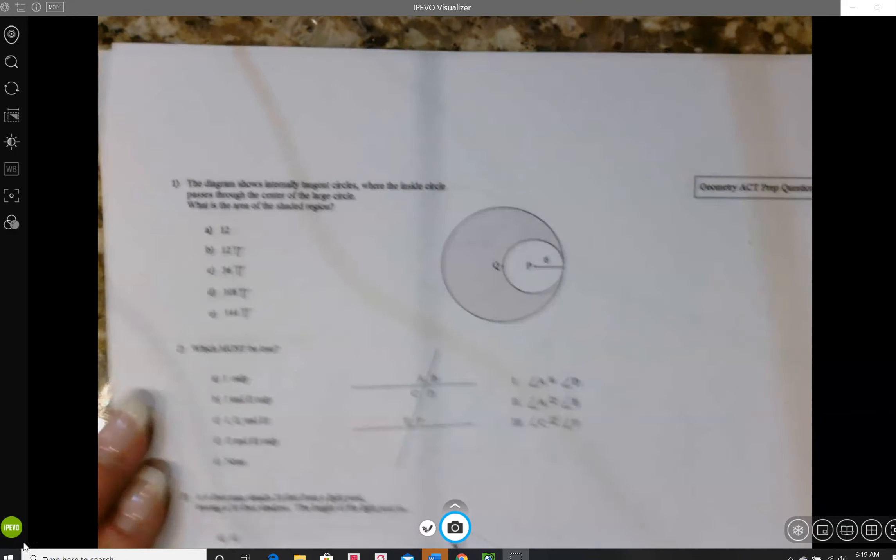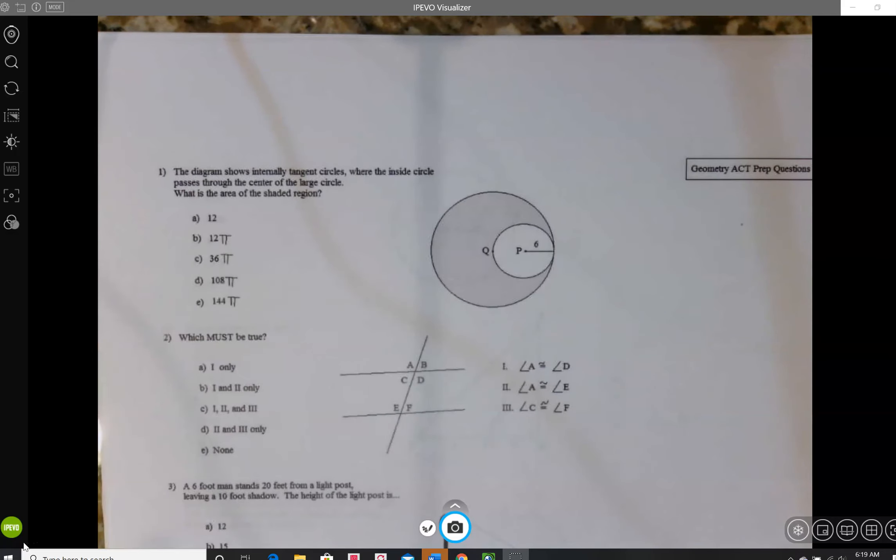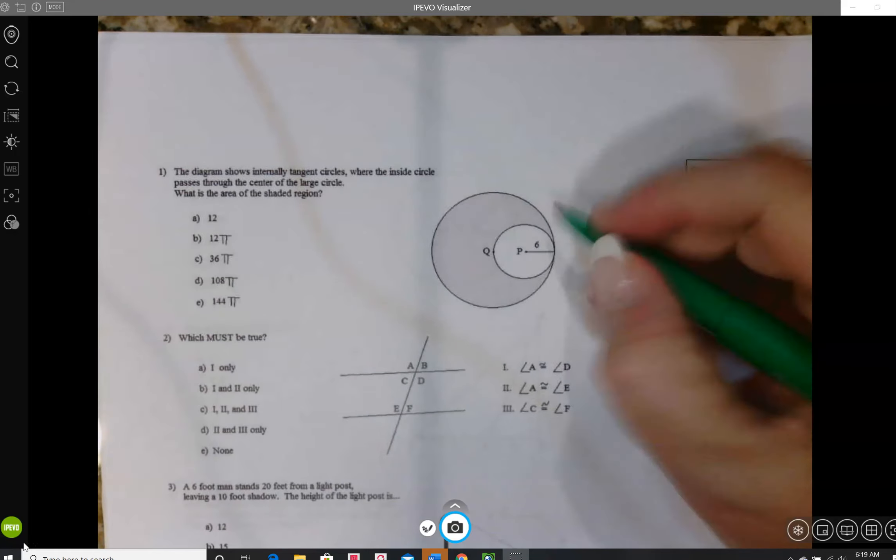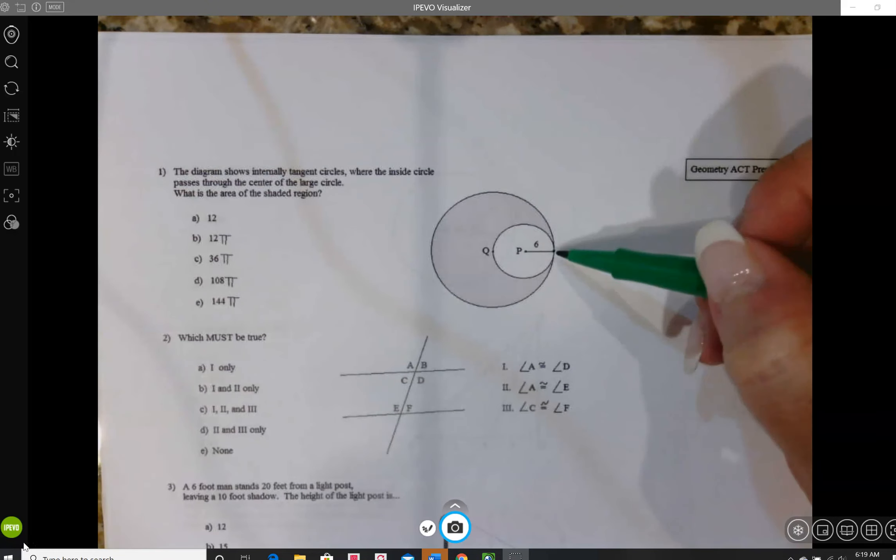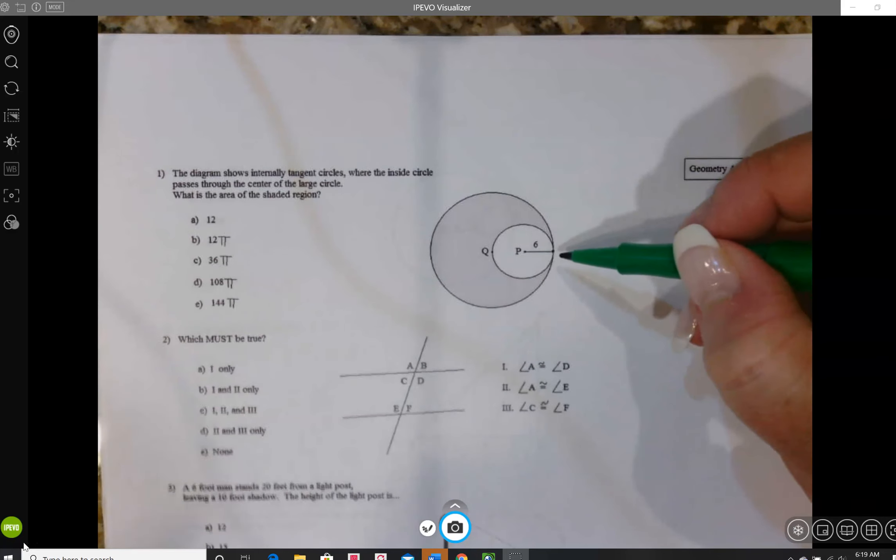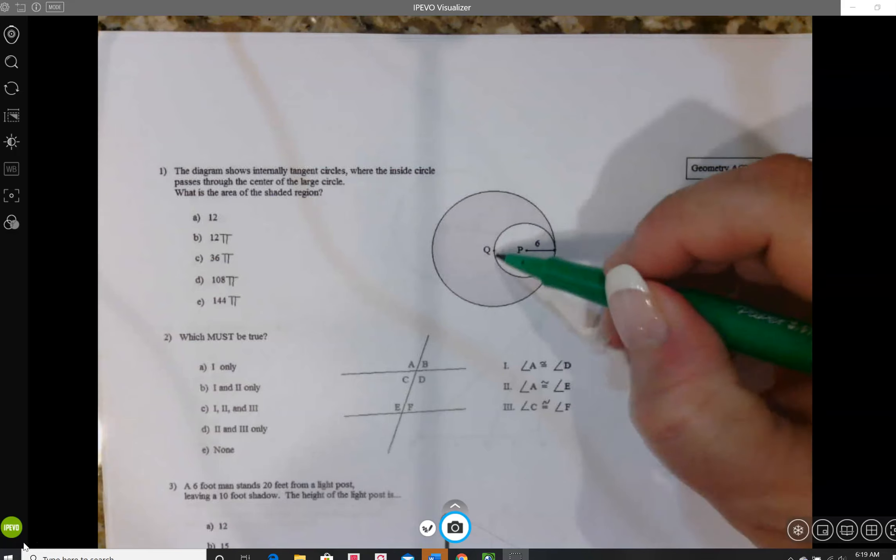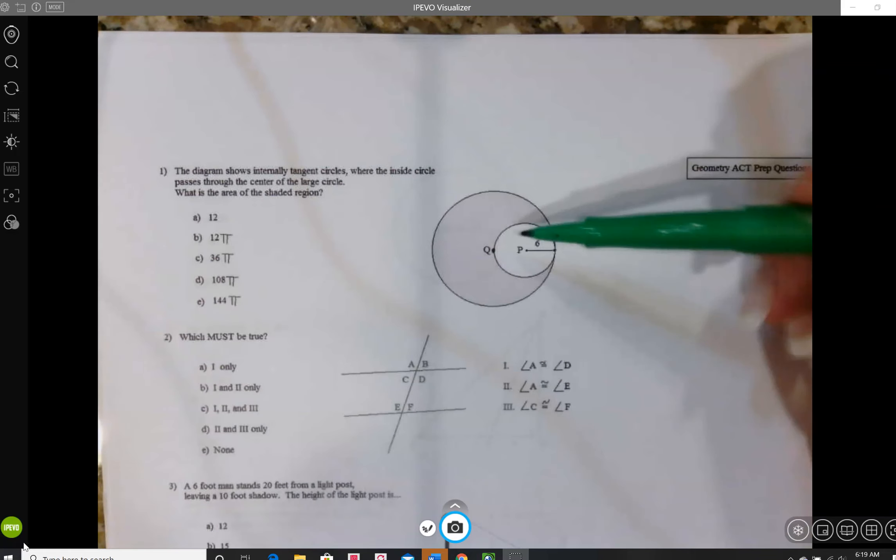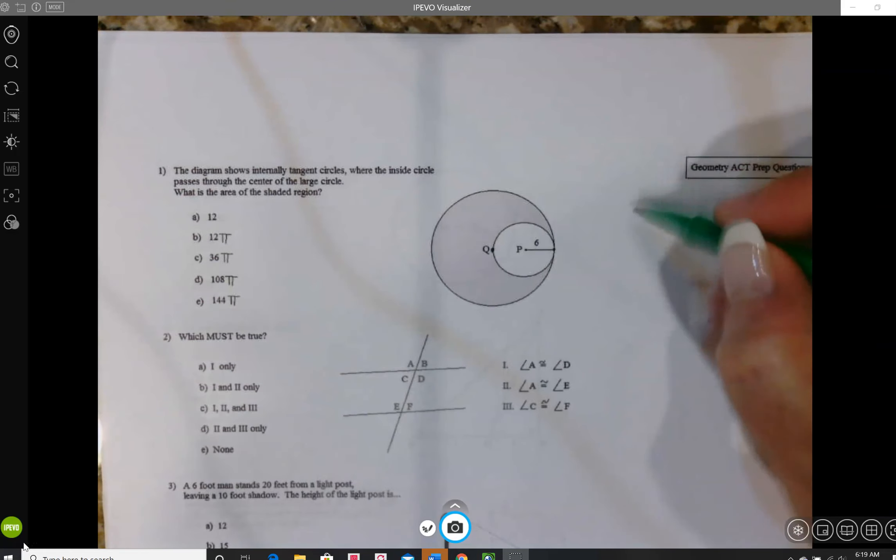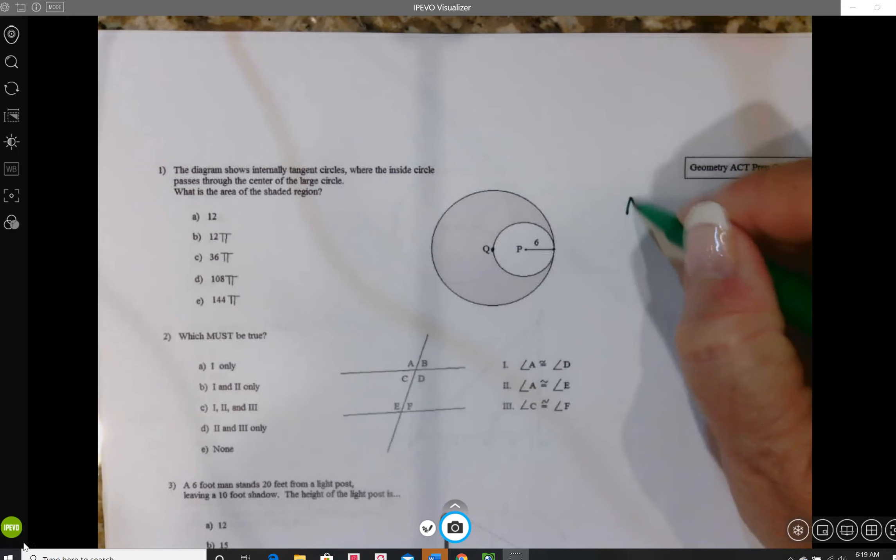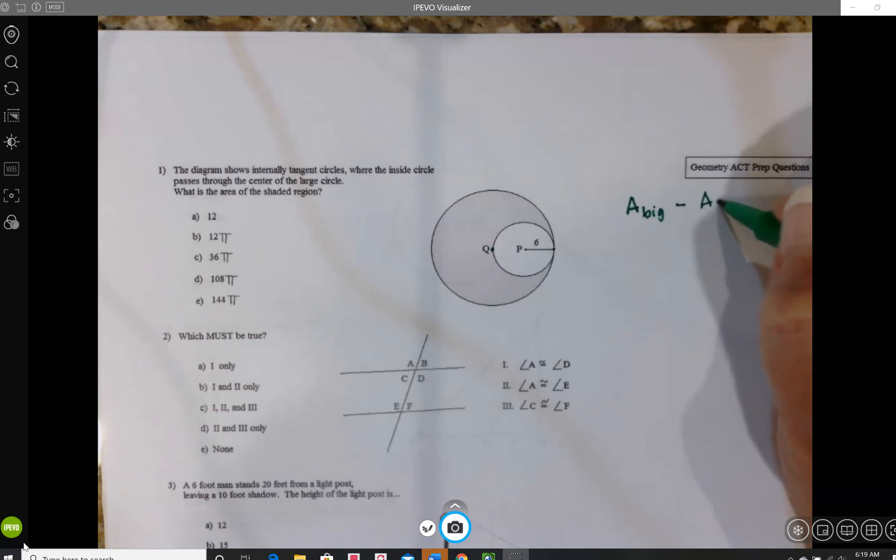So in number one, we have some circles, and the diagram shows internally tangent circles. What the word tangent means when we're talking about circles is that it just touches at one point, where the inside passes through the center of the large circle. And we want to know the area of the shaded region. So whenever I have one of these problems, I take and I try to put into words what I'm going to do. So I need the area of the big circle, and then I'm going to subtract away the area of the little circle.